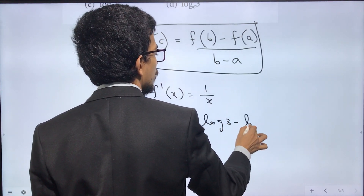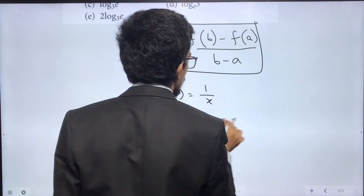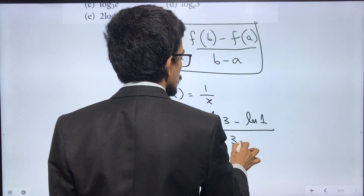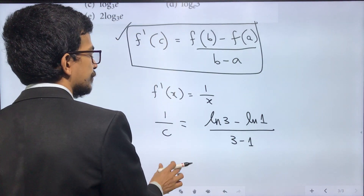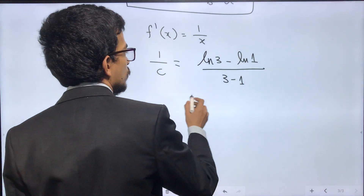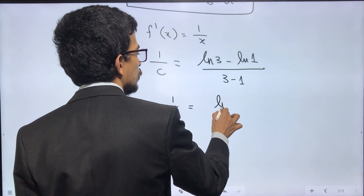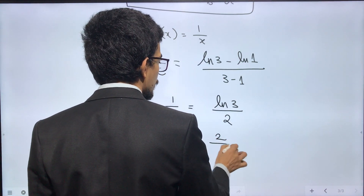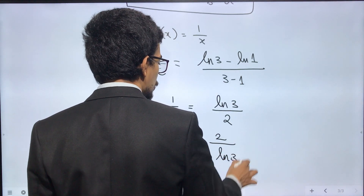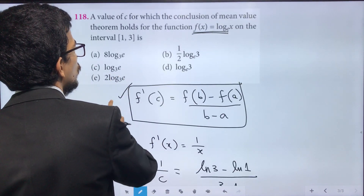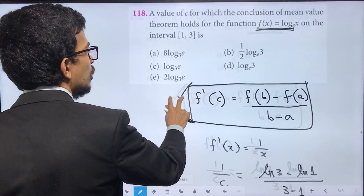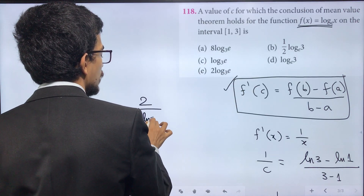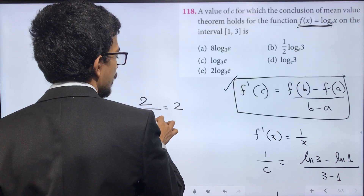So log 3 minus log 1 divided by 3 minus 1. Since log 1 equals 0, this becomes log 3 divided by 2. So 1/C equals log 3 divided by 2, giving C equals 2 divided by log 3, which can also be written as 2 divided by ln 3.